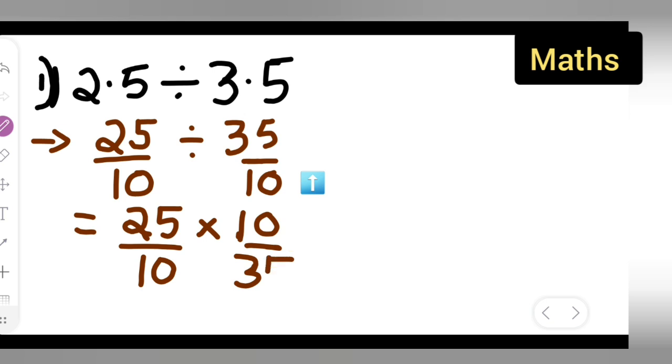10 upon 35. 10 will get cancelled. Then, 5 times 5 is 25, 5 times 7 is 35. So basically your answer is nothing but 5 upon 7.